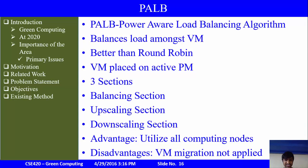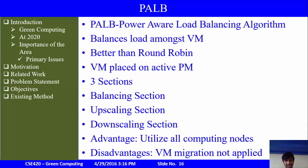PALB includes three main sections: the balancing section, the upscaling section, and the downscaling section. The balancing section determines initiation of a new VM on the physical machine with the lowest utilization. If all active physical machines exceed 75% utilization, an additional PM is switched on in the upscaling section. If a PM utilization falls below 25%, PALB shuts it down via the downscaling section. This algorithm focuses on computing nodes to save costs while keeping availability high, and is intended for small to medium sized local clouds. Note that VM migration is not applied in this algorithm; standby hosts do consume a significant portion of power.